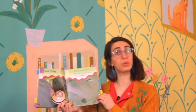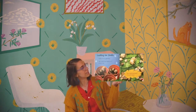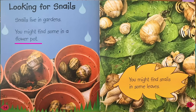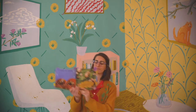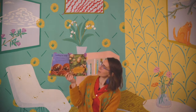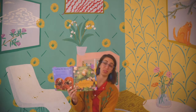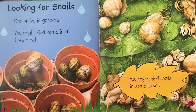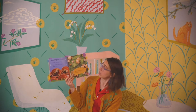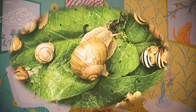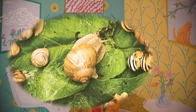Now we're going to take a look at another page to see what we can learn from photographs. This one — you might remember this chapter — it is called Looking for Snails. It says snails live in gardens. You might find some in a flower pot, you might find snails in some leaves. So after looking at these photographs from this chapter, my question for you is: what can you find out about snails' habitats from looking at these photographs? You might have noticed that it looks like the snails are on top of some leaves, so in their habitat they probably have leaves around them. That's something you can learn just from looking at the photograph.